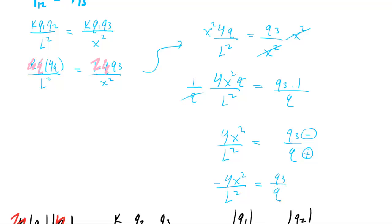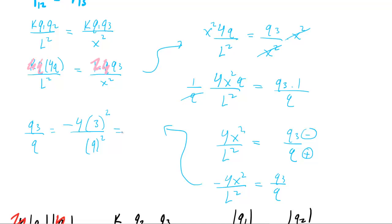Now filling in the values: Q3 over Q equals negative 4 times x squared — where x equals 3 — divided by L squared, where L equals 9. Don't forget to square both values. Working this out gives negative 4 times 9 over 81, which equals negative 0.444. That is the correct answer for the ratio of Q3 to Q.